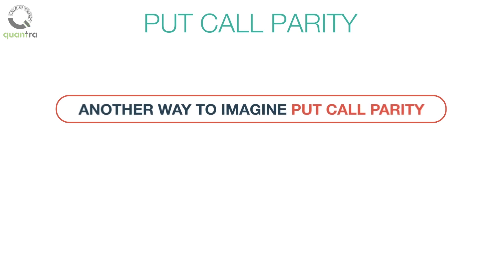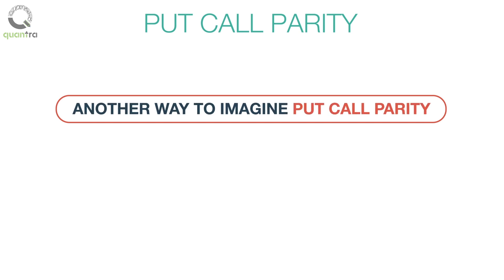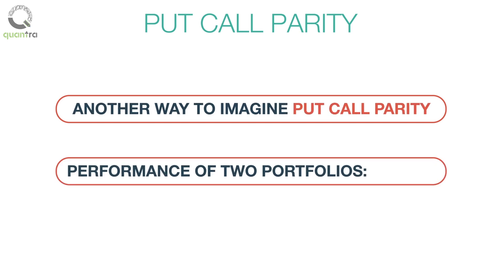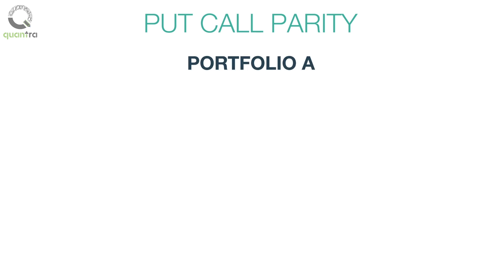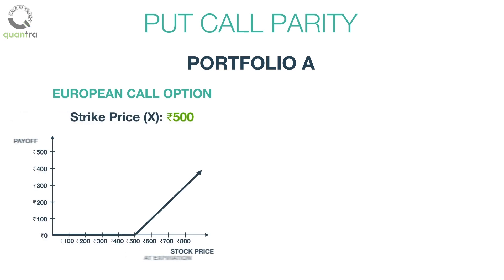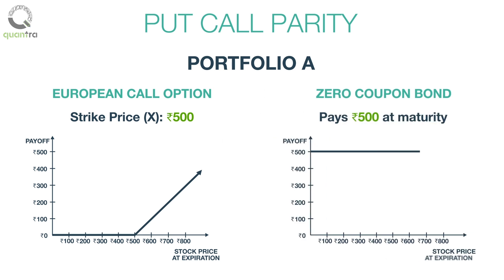There is another way to imagine put-call parity. Let's look at the performance of two portfolios, A and B. Portfolio A consists of a European call option for a strike price X of 500 rupees, and a zero coupon bond which pays 500 rupees — equal to the strike price of the call option — at maturity.